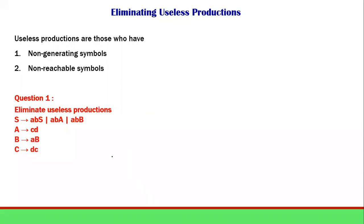The next type of undesired production we have is useless productions. There are two types: non-generating symbols — where we will never get any string finally, meaning it will not terminate with any string — and non-reachable symbols, meaning any variable not reachable from the start symbol S.